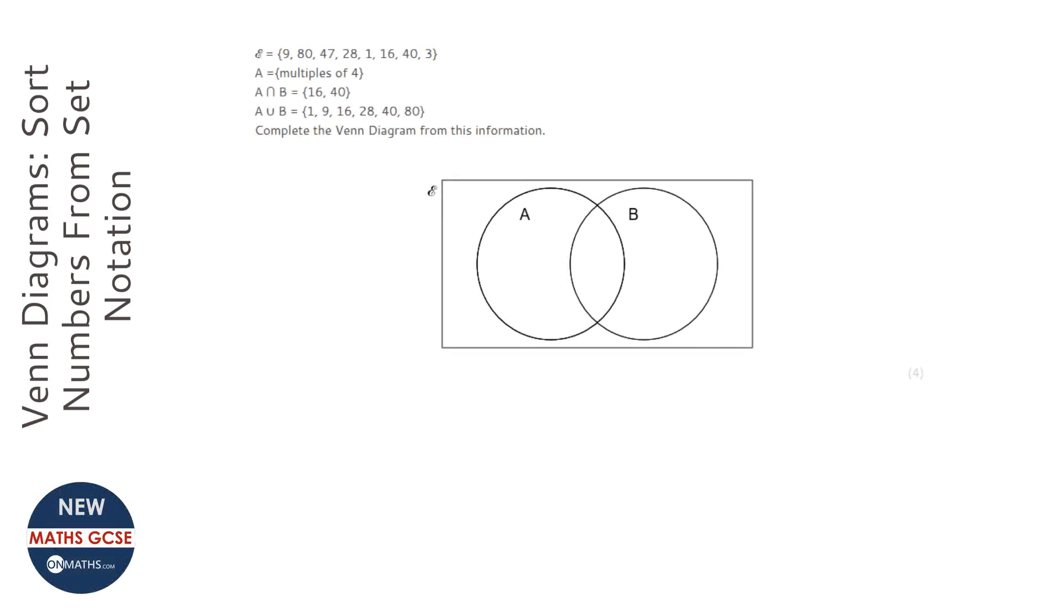OK, so in this question we've got a Venn diagram and we're supposed to fill it with all the numbers from the information shown at the top. So we need to go through the notation.